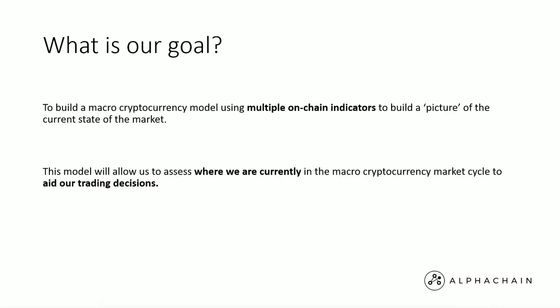So as I've alluded to, our main goal is to build a macro cryptocurrency model using multiple on-chain indicators to build a picture of the current state of the market. The model will allow us to assess where we currently are in the market cycle to aid our trading decisions. OK, that was just the introduction into phase one of the program — I'll see you in phase two.